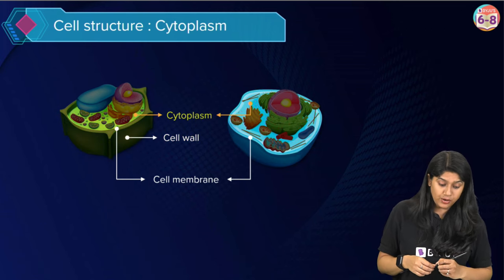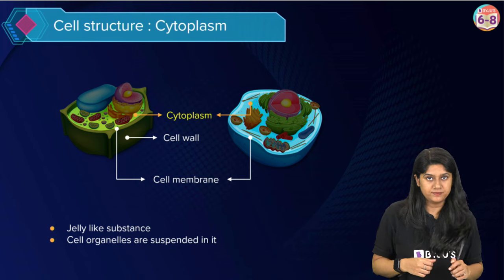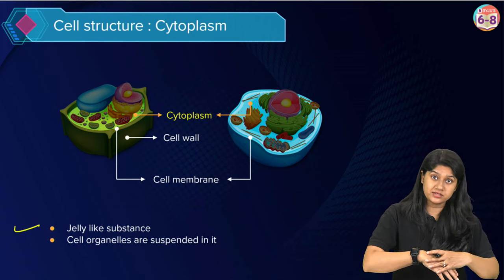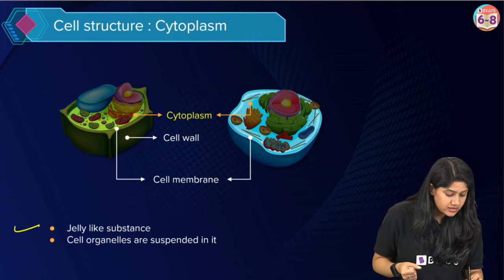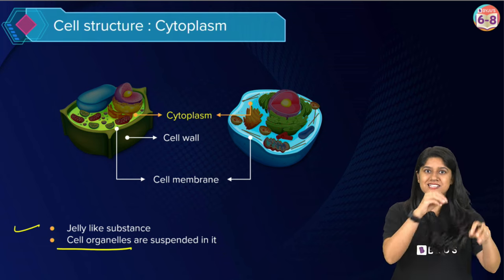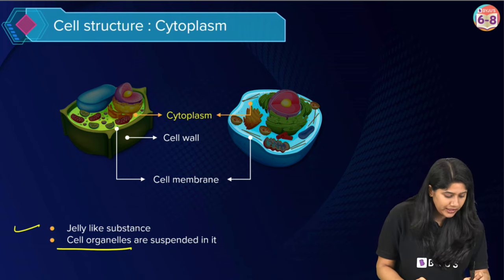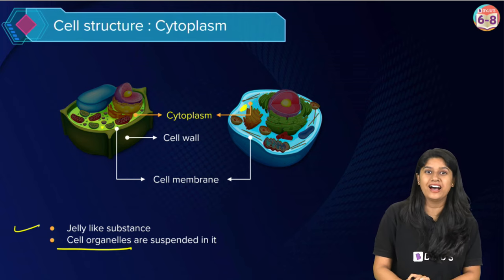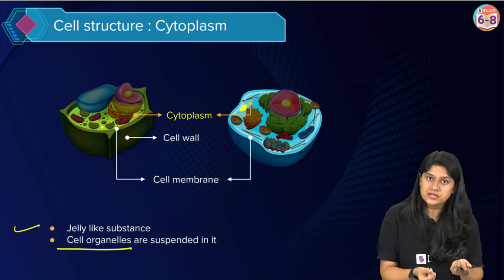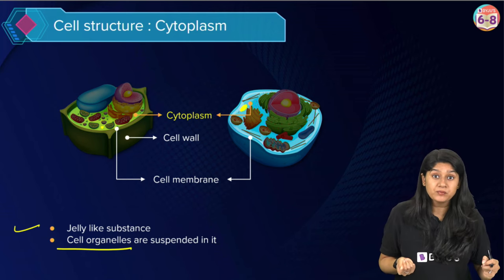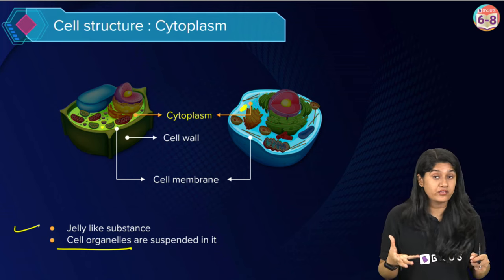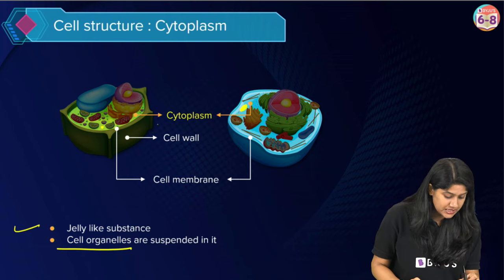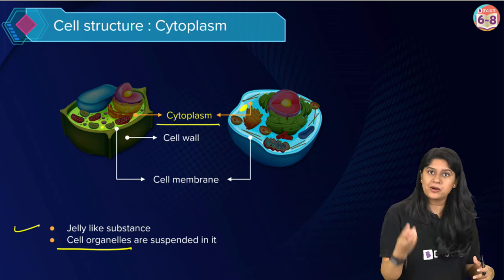Now let's discuss the cytoplasm. Cytoplasm is a jelly-like substance present in the cell. The cell organelles are suspended in it. The fluid jelly substance is the cytoplasm, and all the cell organelles present in both plant and animal cells are suspended in it.